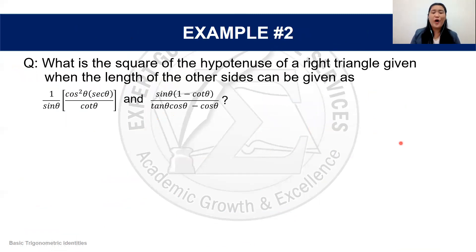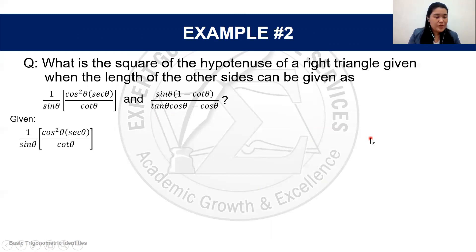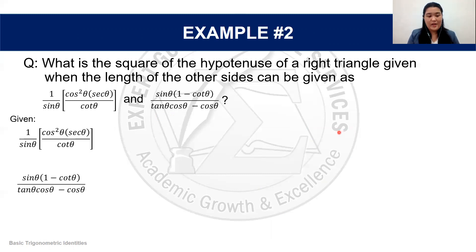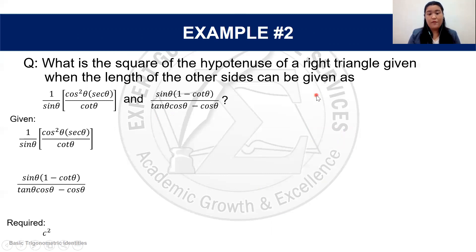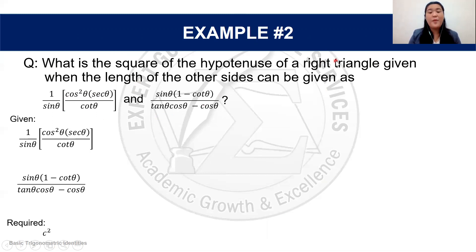Let's have an example. What is the square of the hypotenuse of a right triangle given the lengths of the other two sides? Side A is: (1/sin θ) × (cos²θ × sec θ) / cot θ. Side B is: sin θ × (1 − cot θ) / (tan θ cos θ − cos θ). We're looking for C², and since it's a right triangle, we can use the Pythagorean theorem: C² = A² + B².